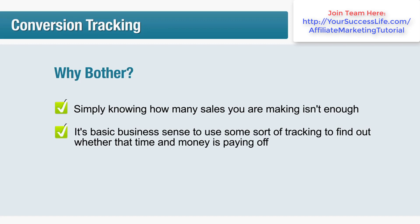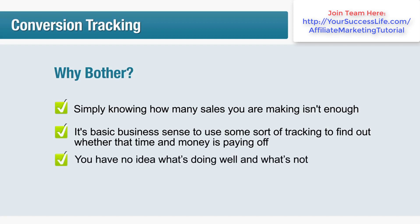Let's say you start promoting a learn guitar product like Jamarama. After a month you can see that you're making on average 10 sales a day. If you're making a profit, that's good — but what if you're not? At this point you have no idea whether that's because your pay-per-click ads aren't very good, whether your landing page is putting people off, or whether you're spending too much promoting the wrong keywords.